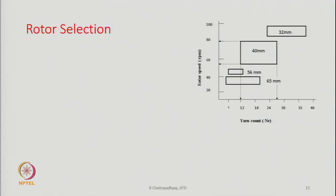Let us now discuss rotor selection. You see a diagram on the right hand side where on the x-axis we have count of yarn and on the y-axis we have rotor speeds. We also see rectangular blocks showing the diameter of the rotors, the speed range, and the count range in which they can work. It is a very interesting picture.